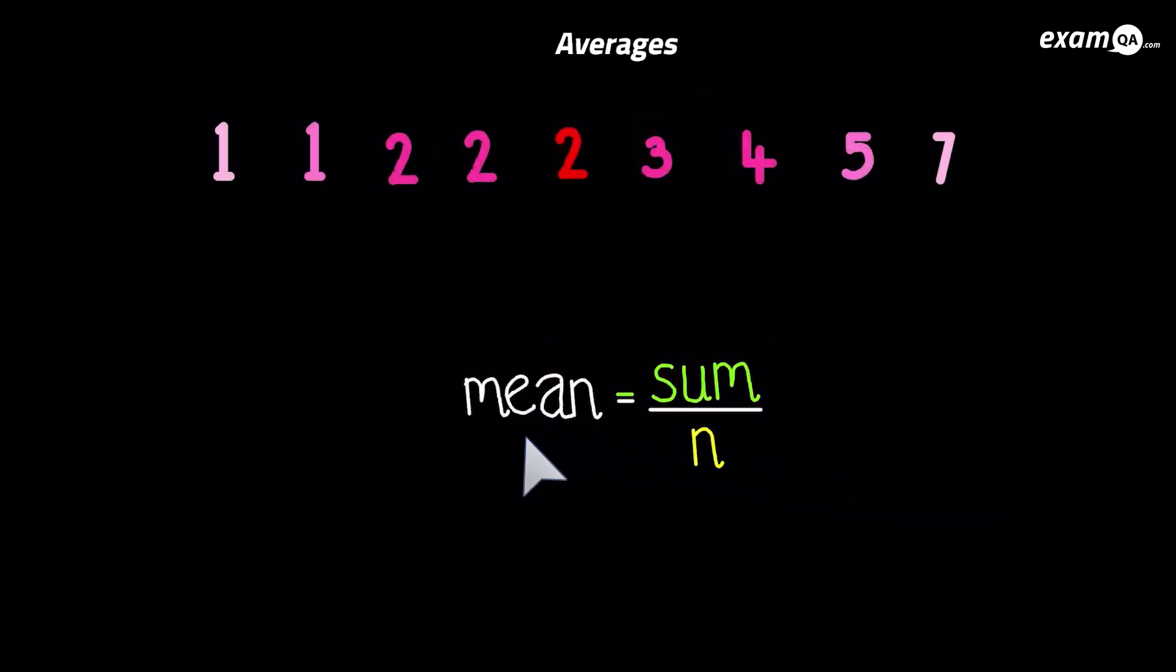So now finally let's look at the mean. So here's the formula for the mean. It's the sum divided by n. Now what is the sum? To work out the sum, you add up all the numbers. Like so. And that gives you the sum.